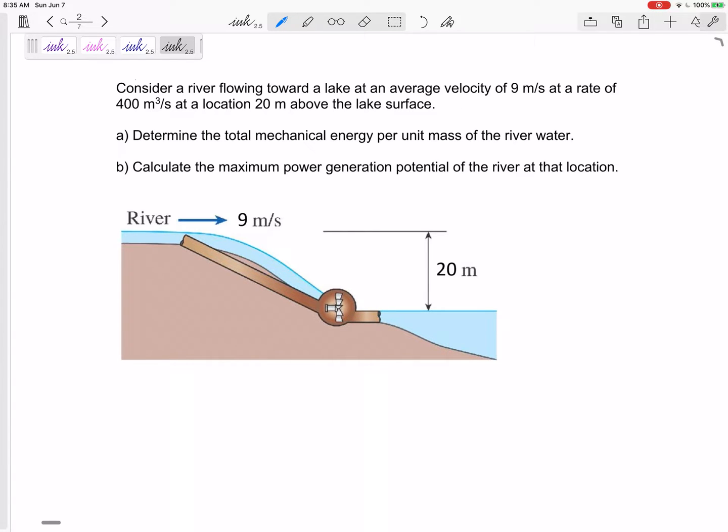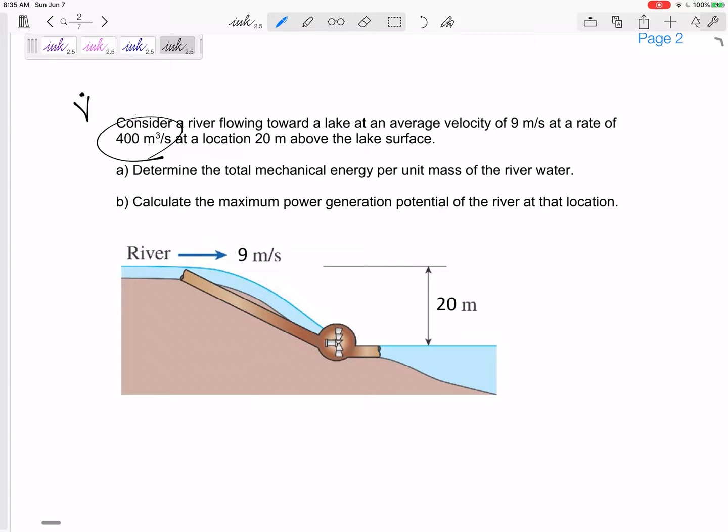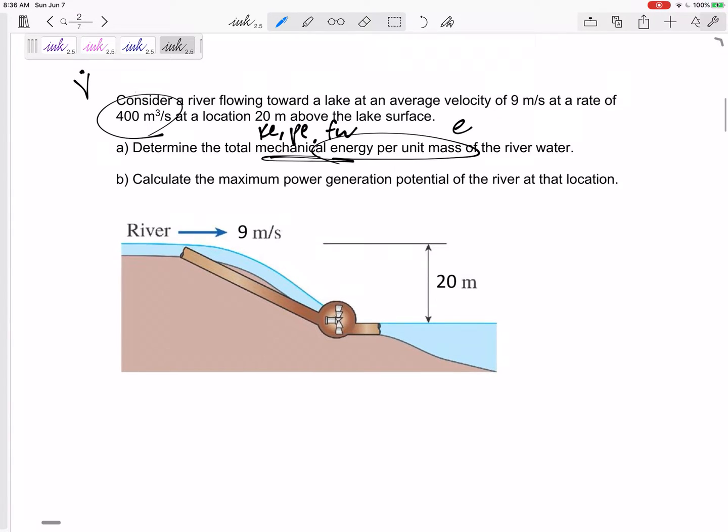This one is a river going toward a lake. Alright, so river flowing toward a lake, an average velocity of nine meters per second. This rate, let's see, is that M dot or is that V dot? That's V dot. That's volumetric flow rate at a location 20 meters above the lake's surface. Determine the total mechanical energy per unit mass of the river water, right? Energy per unit mass is like specific energy, lowercase e. Mechanical energy is kinetic energy, potential energy, flow work. So do we have kinetic energy? Do we have potential energy? Do we have flow work?